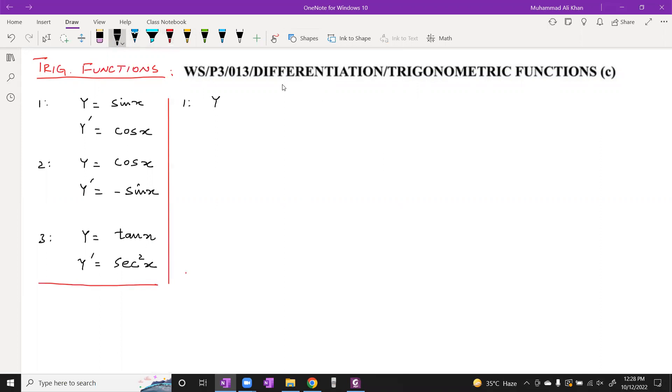The first example: let's say we have to differentiate y equals to sin 2x. What is the derivative of sin x? Cos x. So its derivative is cos 2x. And what will be the angle derivative? 2x derivative. So y prime finally is 2 cos 2x.